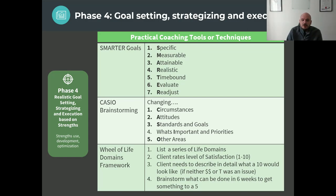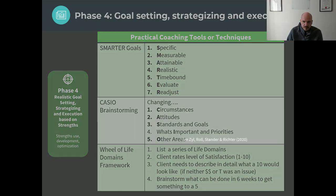And finally there's a nice technique called the Wheel of Life domain, where you list 10 domains that are important to you — family, relationships, work, etc. You get the client to rate them on a scale of 1 to 10, where 1 means you don't have it at all and 10 is the perfect world. Then you ask the client to describe what a 10 would look like in that specific area — taking out all constraints: if money was not an issue, if time was not an issue. You then ask them to rate themselves on their own definition and focus on the two or three things that are the lowest.